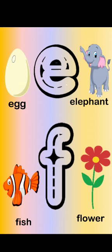Which letter is this one? This is letter E. And what's the vocabulary word of letter E? E for egg, E for elephant. And what's the sound of letter E? Eh. Very nice.